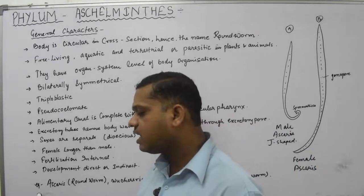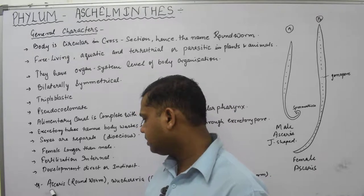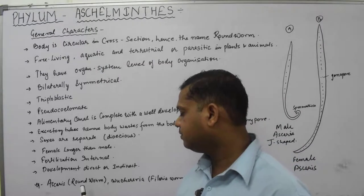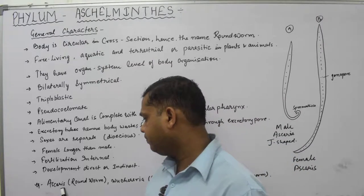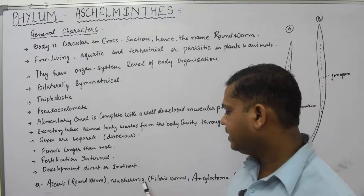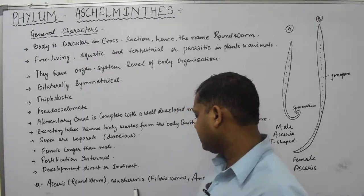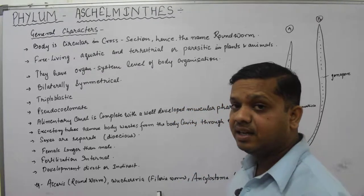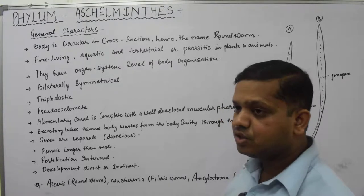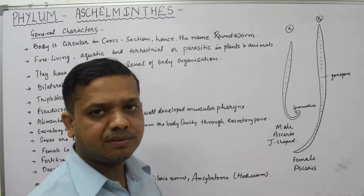The major examples of phylum Aschelminthes are: first, Ascaris, which is called the roundworm, the major animal of this phylum. Second is Wuchereria bancrofti, also known as the filarial worm. Third is Ancylostoma, which is called the hookworm. These are the examples of this phylum.